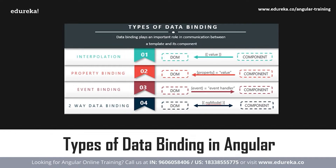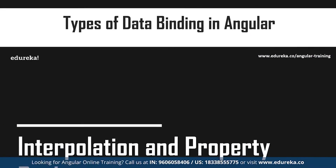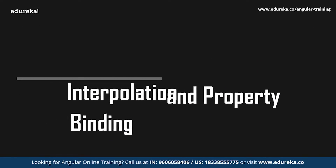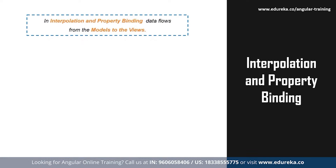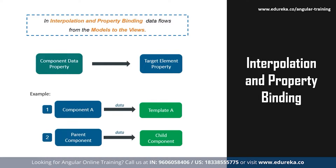In Angular, one-way data binding can be achieved through interpolation or string interpolation, property binding, and event binding. Two-way data binding, on the other hand, allows synchronization of data such that views can be updated using the models and the models can be updated using the views. This means your application will be able to share information between a component class and its template. In one-way data binding, data flows only in one direction — from the models to the views.